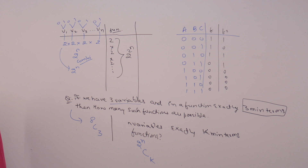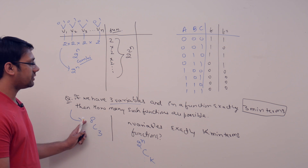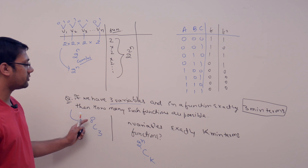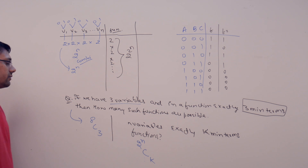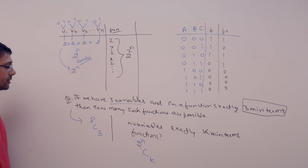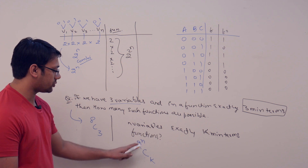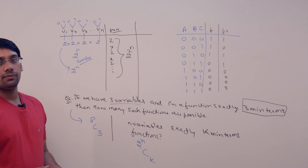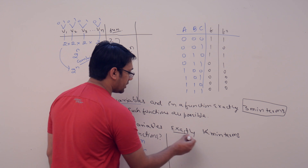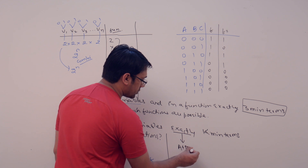So the answer is 2^n C k. But if instead of exactly k min terms, the question says at most k min terms — meaning the number of min terms can be 0, 1, 2, up to a maximum of k — then how many functions are possible?